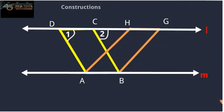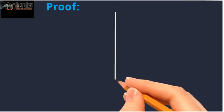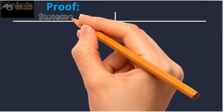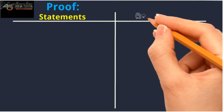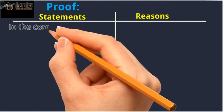Construction: Let's name the angles as shown in the figure. The proof consists of two main portions — one containing the statements and the other providing the reasons and solid ground for the given statements.